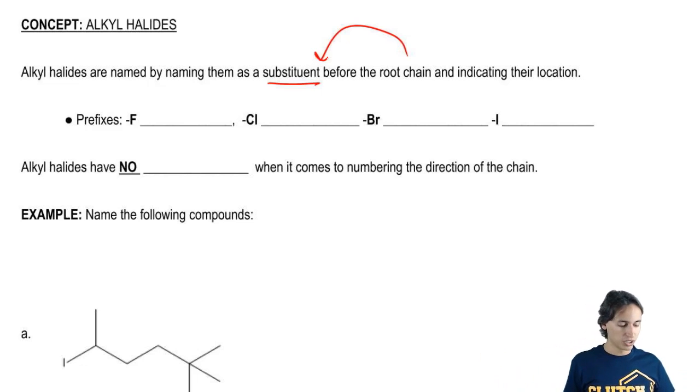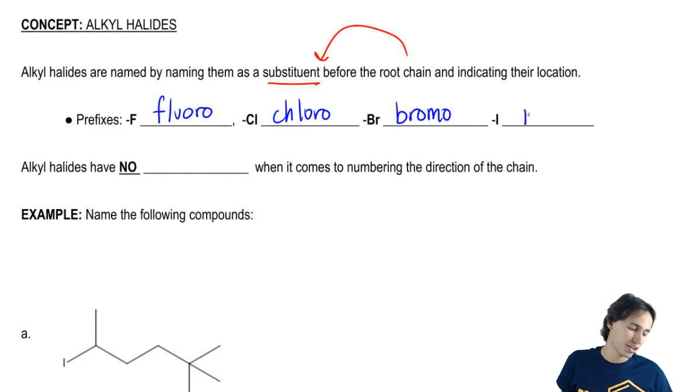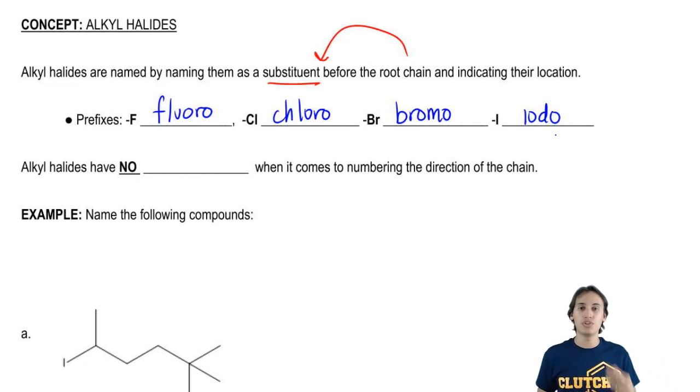So one thing we should know is our prefixes for these different halogens. So fluorine would get the prefix fluoro. Chlorine gets the prefix chloro. Bromine gets the prefix bromo. And then iodine gets the prefix iodo. And these are going to be the prefixes that we use to assign the name to the alkyl halide.